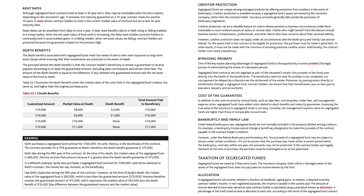Reset dates. Although segregated fund contracts have at least a 10-year term, they may be renewable when the term expires, depending on the annuitant's age. If renewed, the maturity guarantee on a 10-year contract resets for another 10 years. A reset allows contract holders to lock in the current market value of the fund and set a new 10-year maturity date. Reset dates can be anywhere from daily to once a year. A daily reset benefits clients in both rising or falling markets. In a rising market, the daily reset enables contract holders to continually lock in accumulated gains. In a falling market, contract holders are protected because the guarantee is based on the previous high.